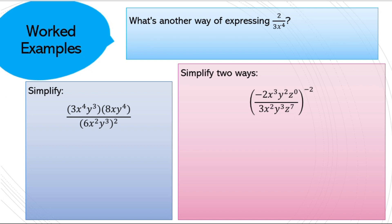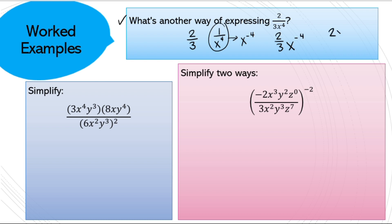We'll go through a couple of examples. With exponent laws there are usually several different methods to get to the same answer, so if you solved it differently that's fine as long as we get the same result. Starting with the light blue: what's another way of expressing 2 over 3 x to the power of 4? We could leave 2/3 as a coefficient and deal with that x⁴, which is like 1 over x⁴. We could convert that to x to the negative 4.